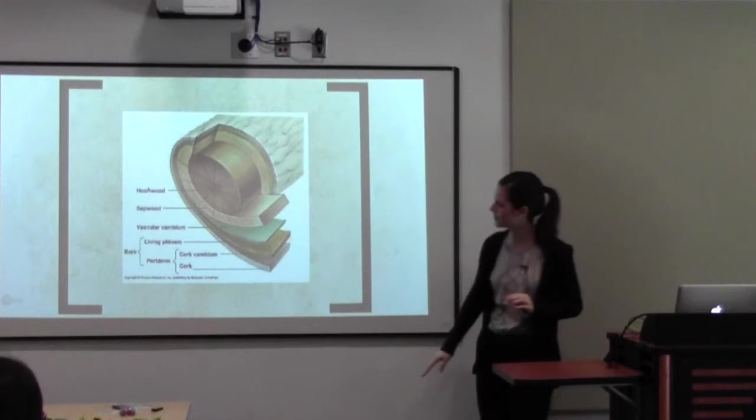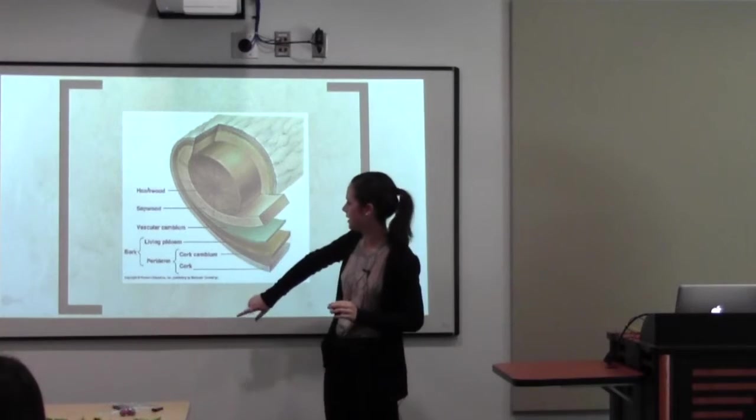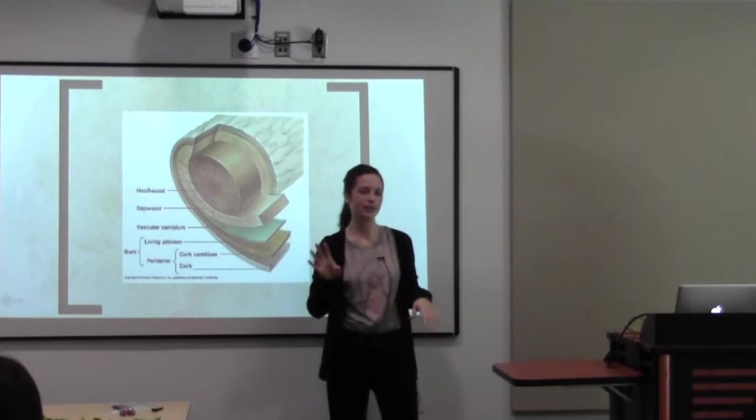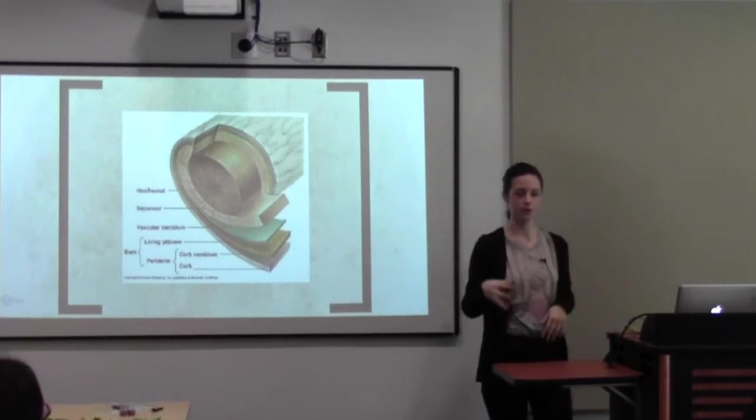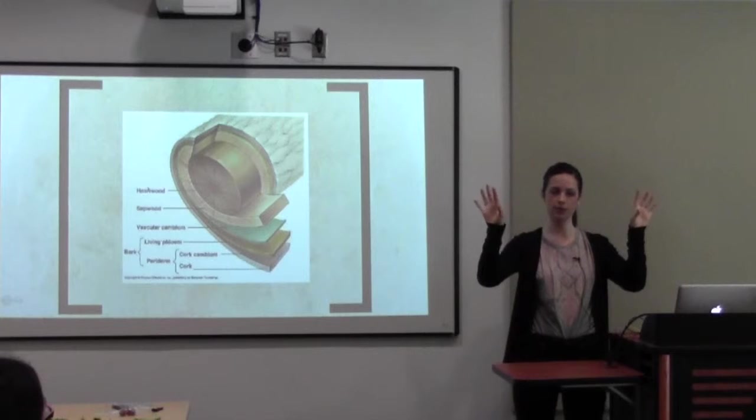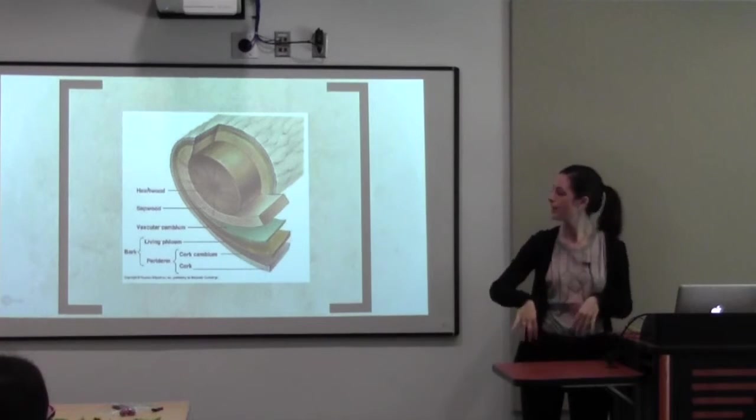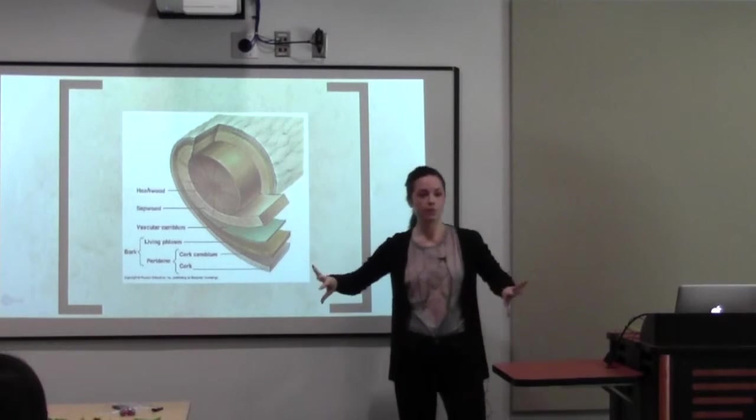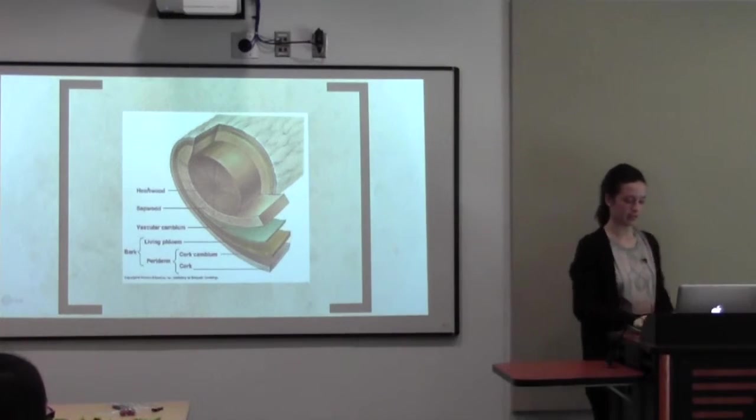You have all these different layers, but it's important to notice that there's the phloem. You can think of phloem as food. The phloem will help all the nutrients from the leaves get down to the roots. And the xylem will help the water from the roots get up to the leaves.